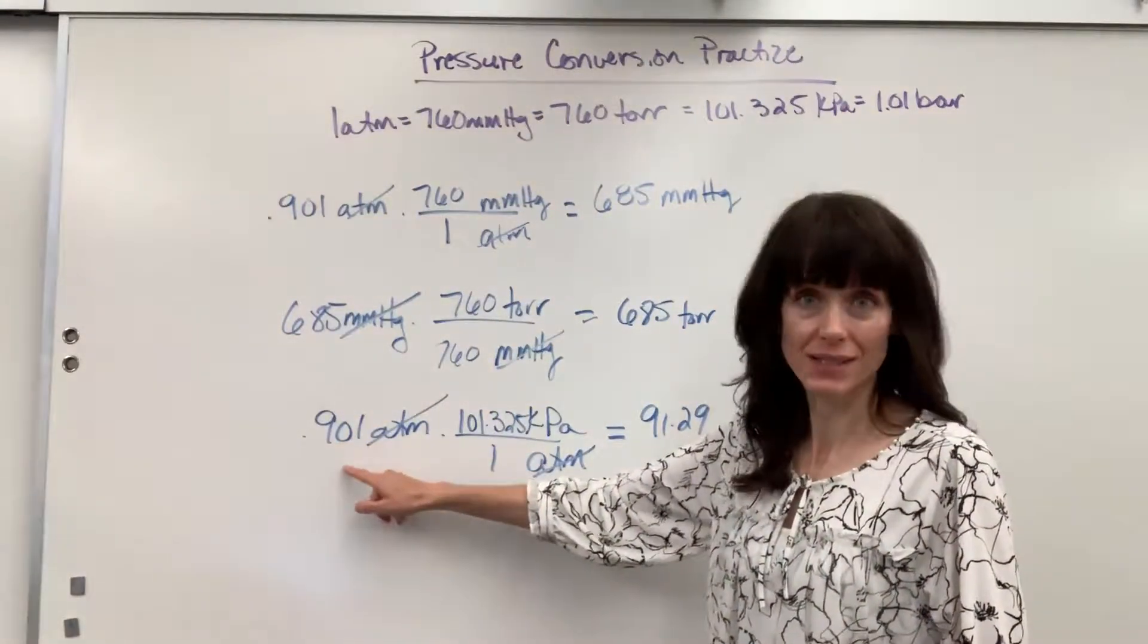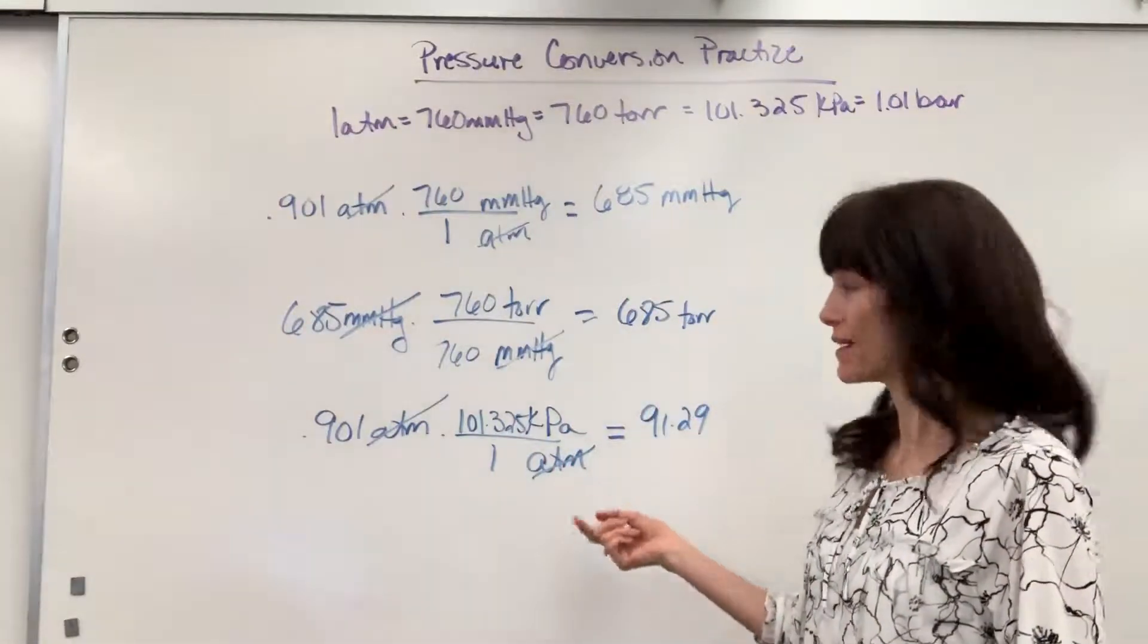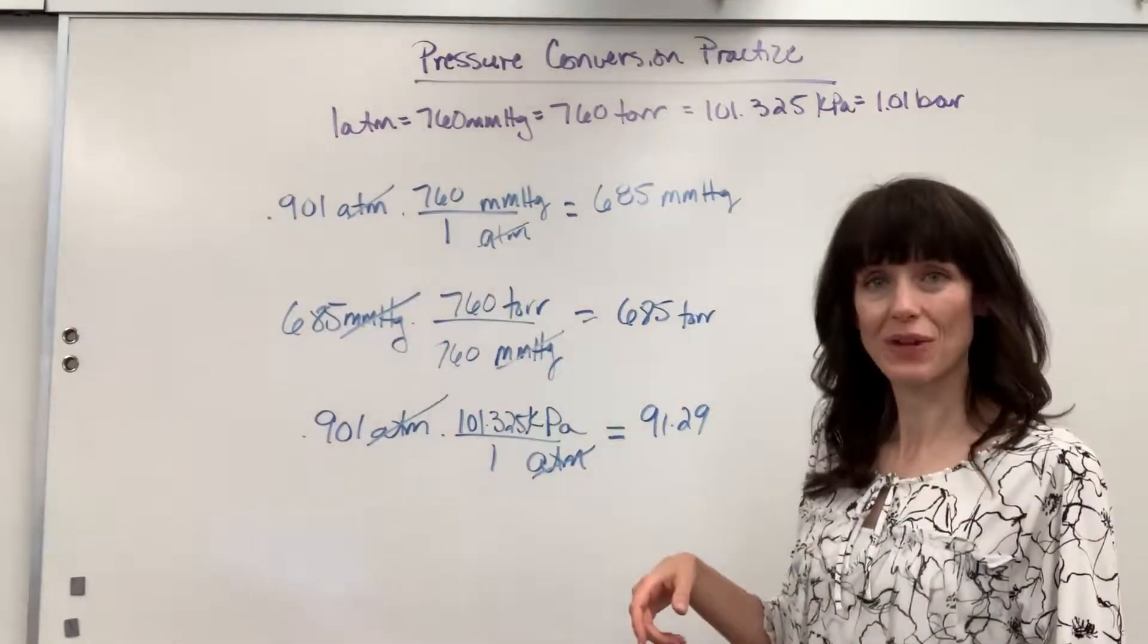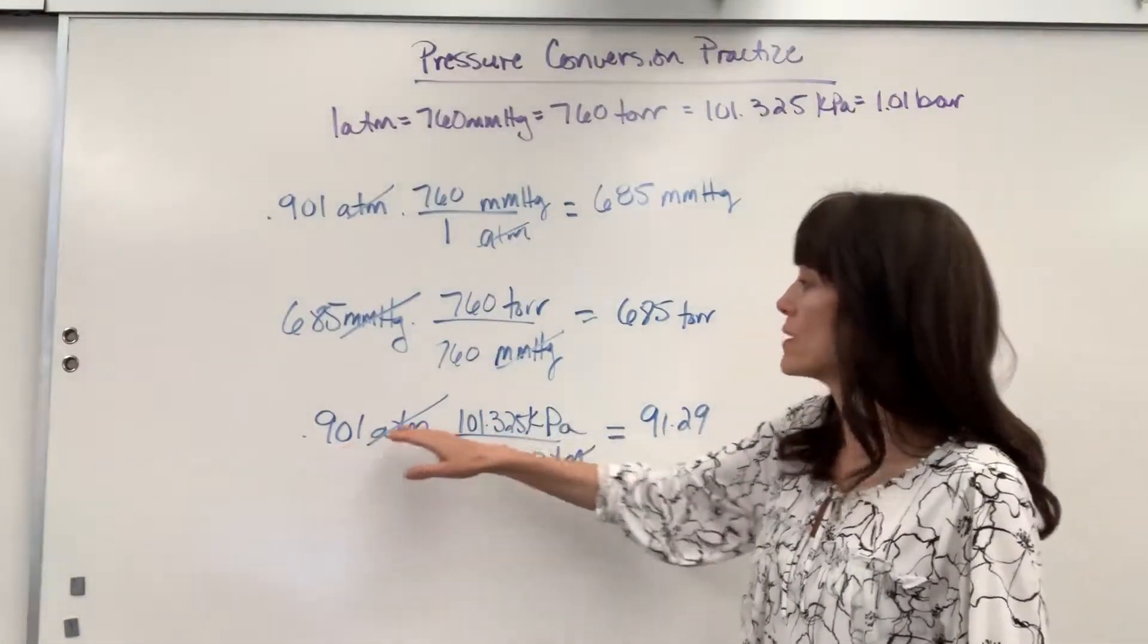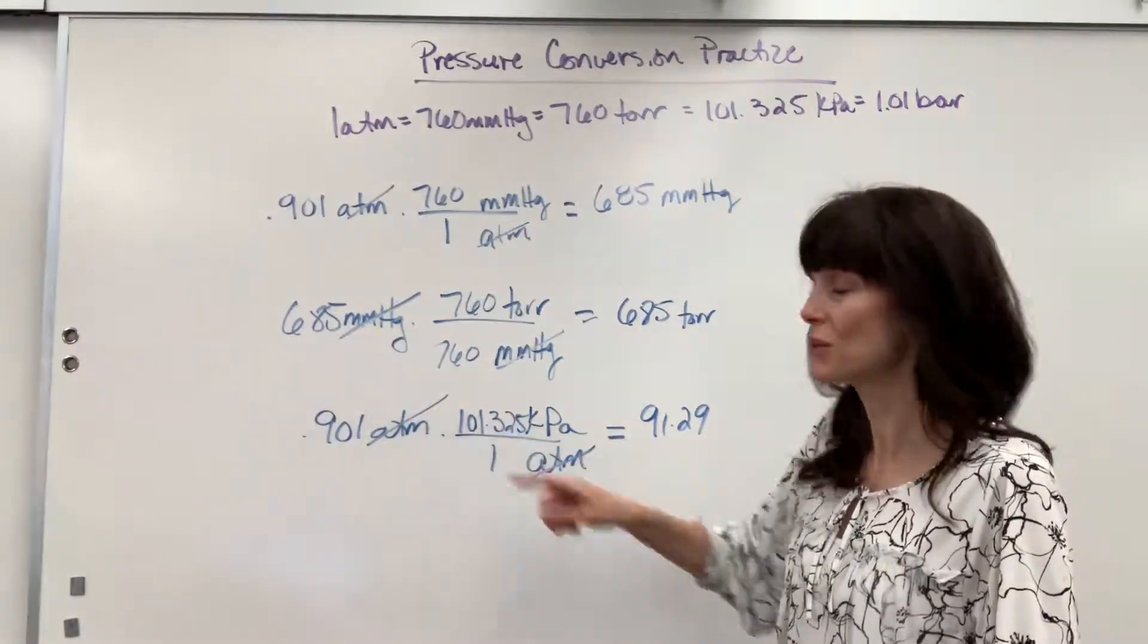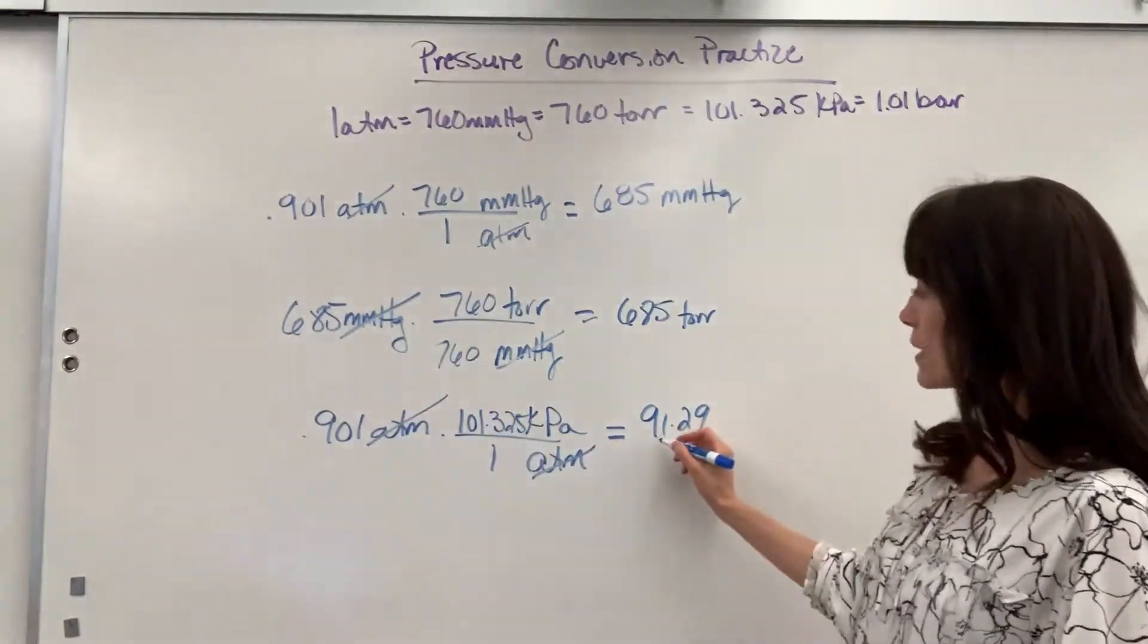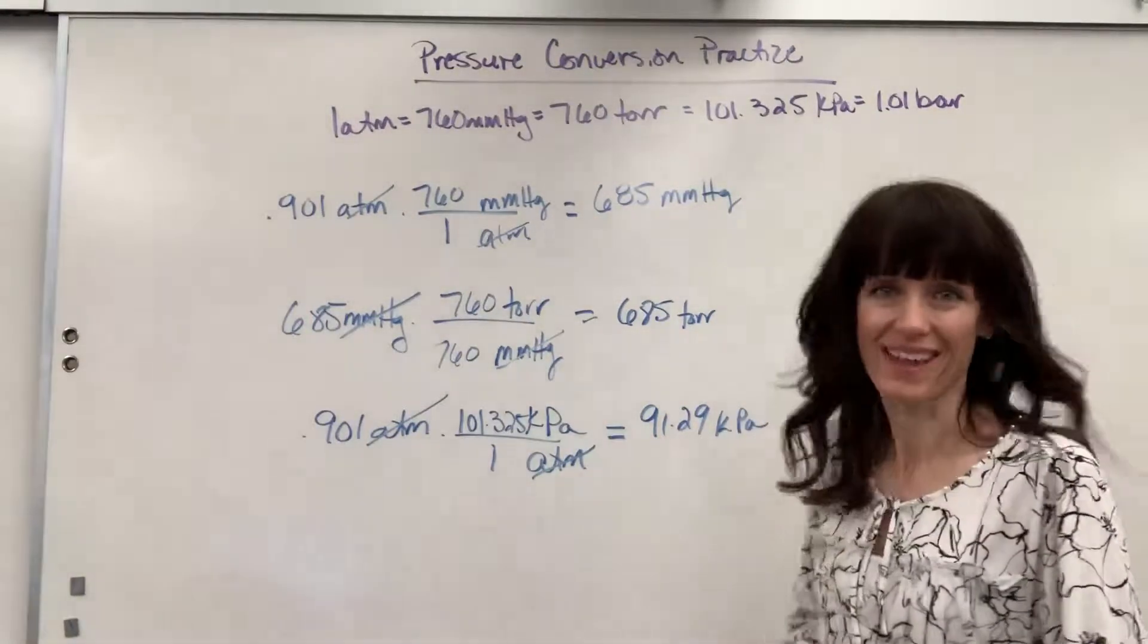You're going to have the 0.901 ATM that we are converting to kilopascals. We put the ATM on opposite sides of that fraction so they cancel. We'll end with 0.901 times 101.325, because they're both in the numerator. That would equal 91.29, and my unit is kilopascals.